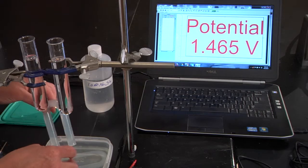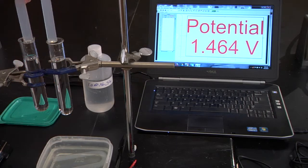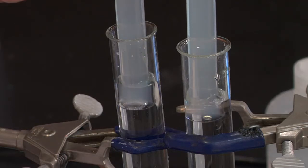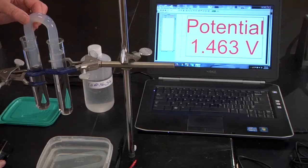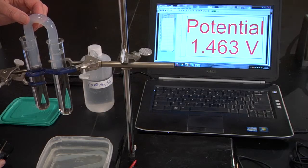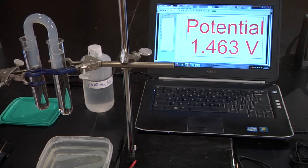To connect the two tubes together, we're going to use a salt bridge. This is just a little bit of agar in a potassium nitrate solution, just to slow down the flow, but again, to give a charged positive potassium and negative nitrate to facilitate the flow.